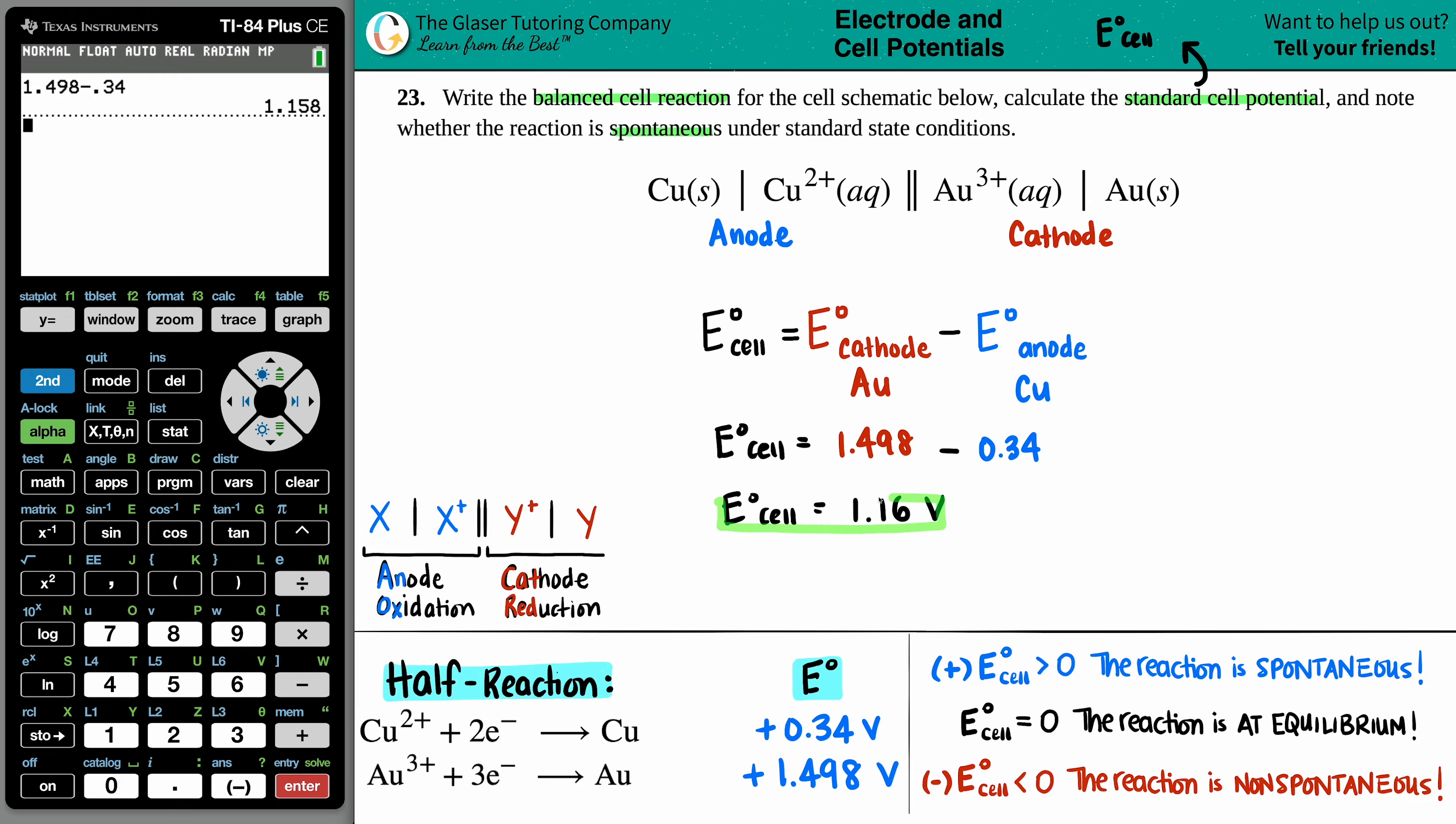So that is the standard cell potential. We got one out of the three questions already done. From that information, I can actually find out if this is spontaneous or not, because I can look at the sign of my E cell, my standard cell potential. If my E cell is a positive value or greater than zero, the reaction is spontaneous. If the E cell is negative, it's non-spontaneous. Since this is a positive value, my answer is spontaneous.